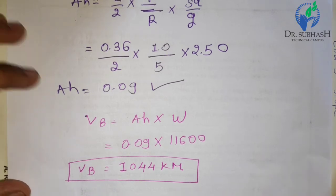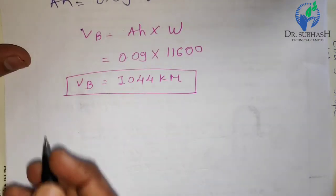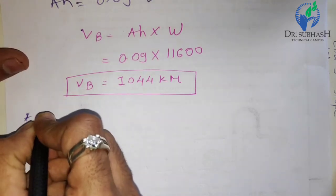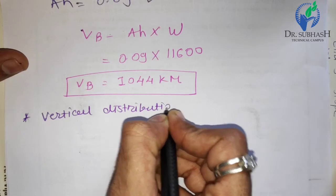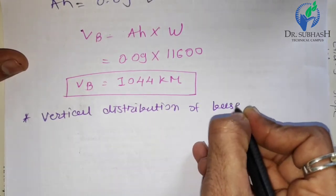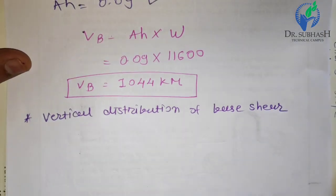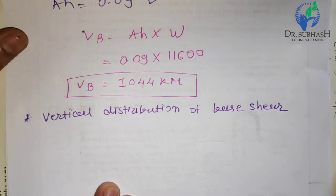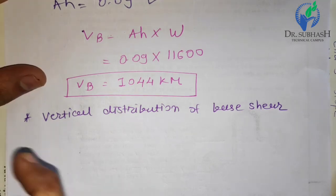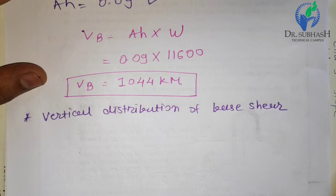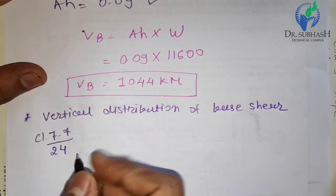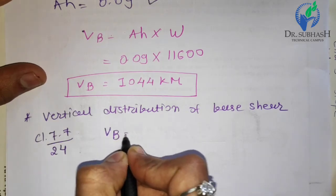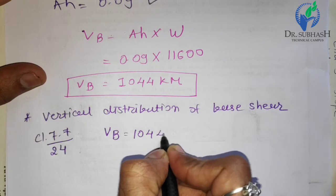The last remaining step for this example is the vertical distribution of base shear. We have already calculated total base shear VB = 1044 kN. Now we distribute it floor-wise to find the base shear of each individual story — the shear force VI — as per clause 7.7, page 24 of IS 1893.